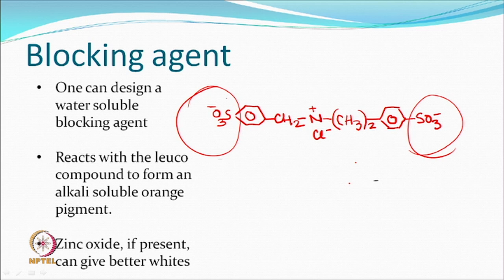If you also add inorganic compounds like zinc oxide in the discharge paste, you can get better whites, which people normally do. So, you have a blocking agent required so that the chances of the dye going back to its original form are restricted. If you add a solubilizing group, you can wash it off as well. Without the solubilizing group, it is a water-insoluble compound, which is difficult to remove.